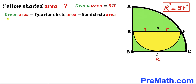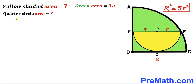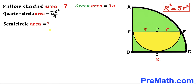Now let's observe that the green shaded region area equals the area of the quarter circle minus the area of the yellow semicircle. We know the green shaded region area is 3π. The area of the quarter circle is π·R²/4, using the circle area formula where uppercase R is the radius.